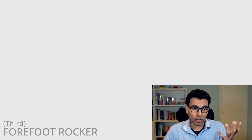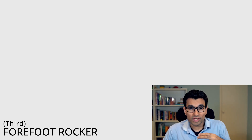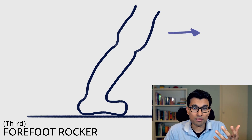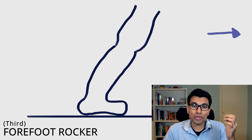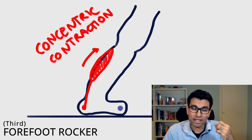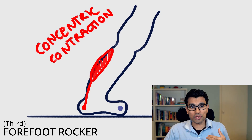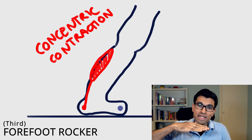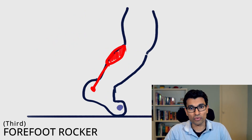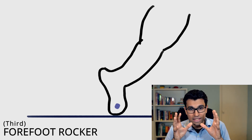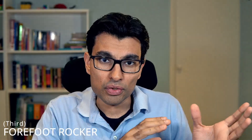The last rocker is the forefoot rocker. The stance phase must complete and transition to swing phase, requiring the heel and then the foot to leave the ground. This is where we have the first concentric contraction of a muscle — the gastro-soleus complex switches from eccentric to concentric. The forefoot remains planted, the heel leaves the ground, and the body rocks forward over the forefoot — hence the term forefoot rocker. In a concentric contraction, the fibers progressively shorten, which is the classic contraction we're familiar with.